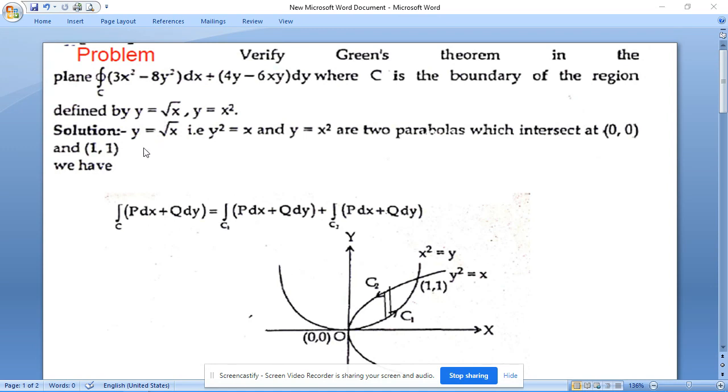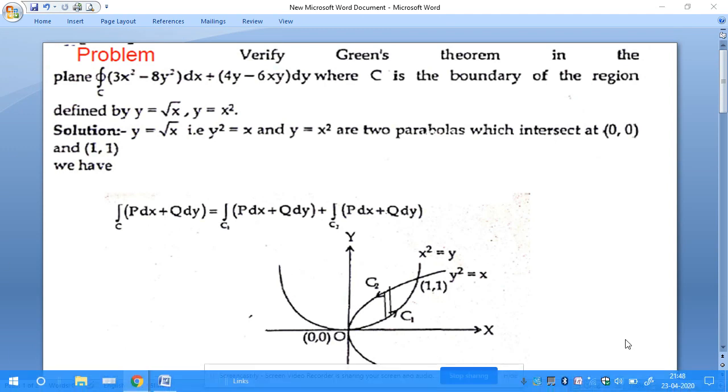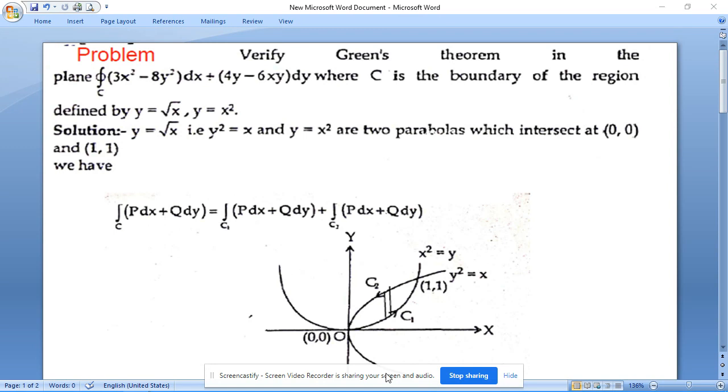So y = √x means squaring on both sides, y² = x. This is a parabola symmetrical about the x-axis. So look at this figure, that is y² = x, a parabola symmetrical about the x-axis and passing through the origin.